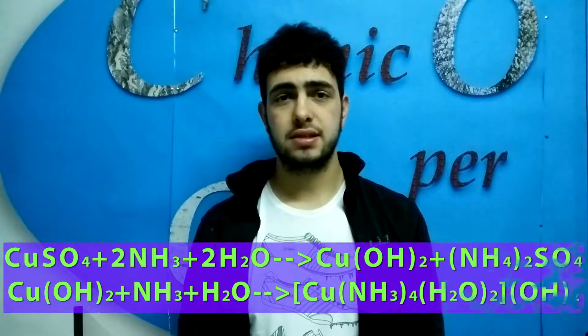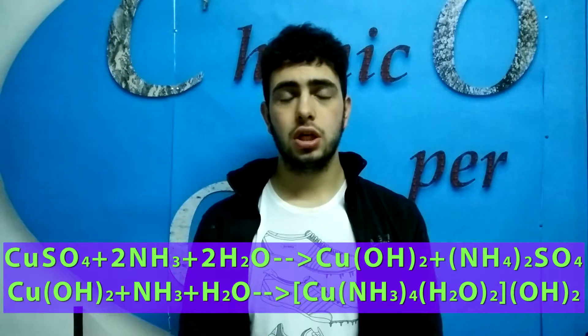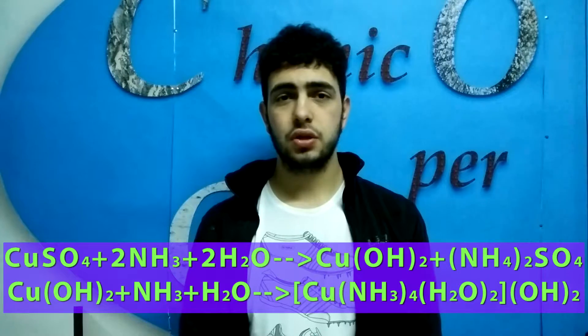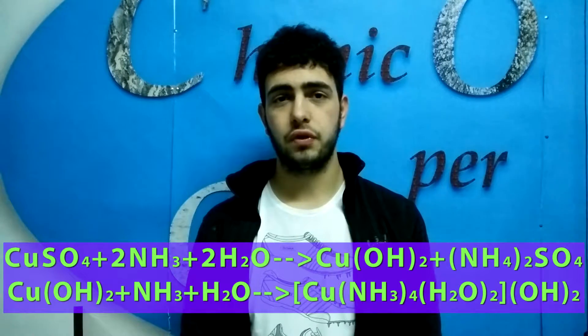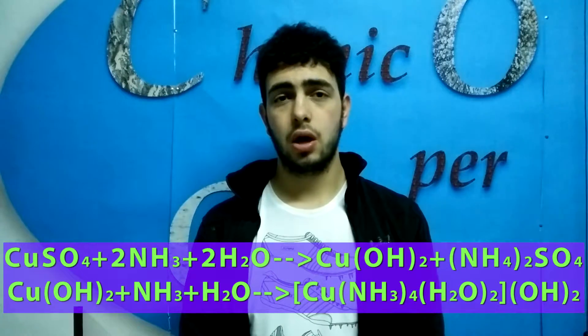Let's see the chemistry part of this experiment. What is important in this reaction is that copper hydroxide is insoluble in water, so we can take it as a precipitate and get it in a pure form, since our other products are soluble in water and so they don't form a precipitate. In the reaction, we make copper sulfate react with ammonia, and this reaction leads to the product of copper hydroxide.